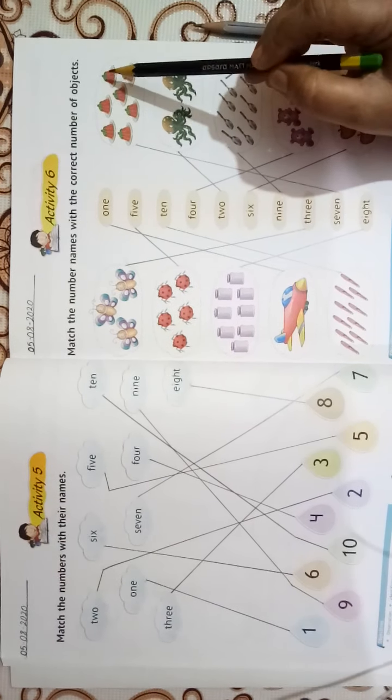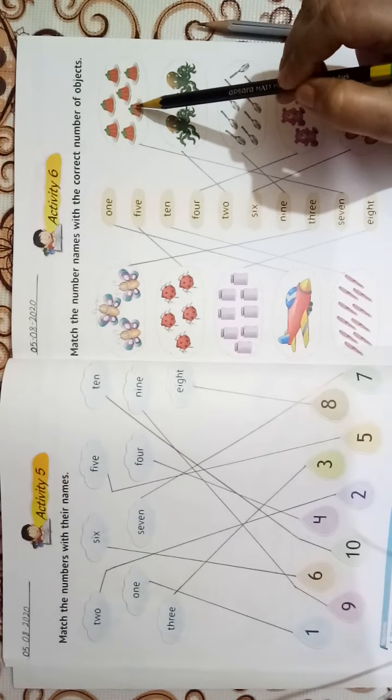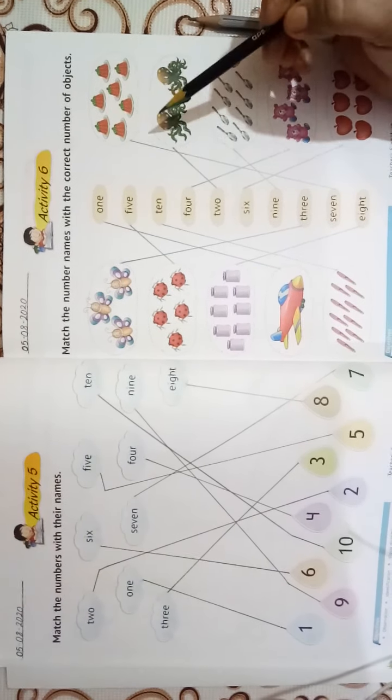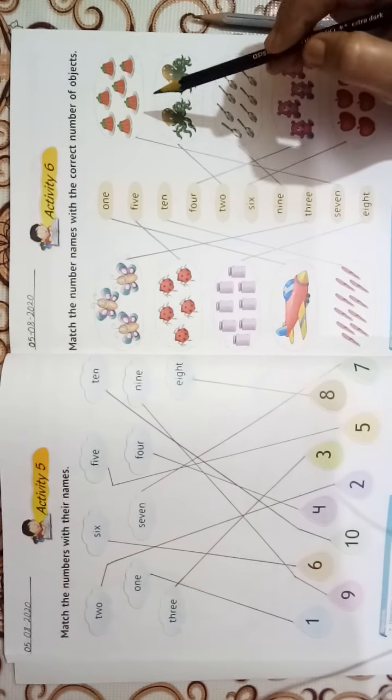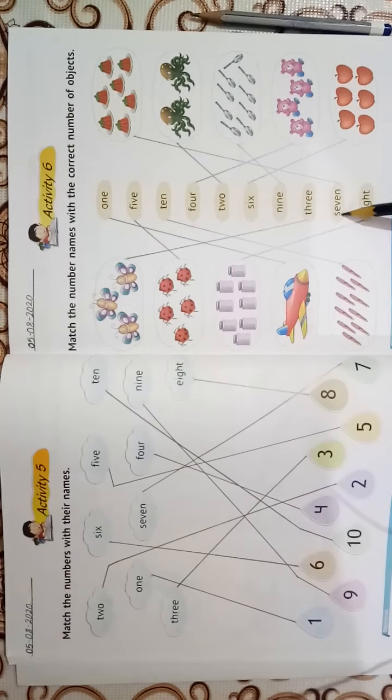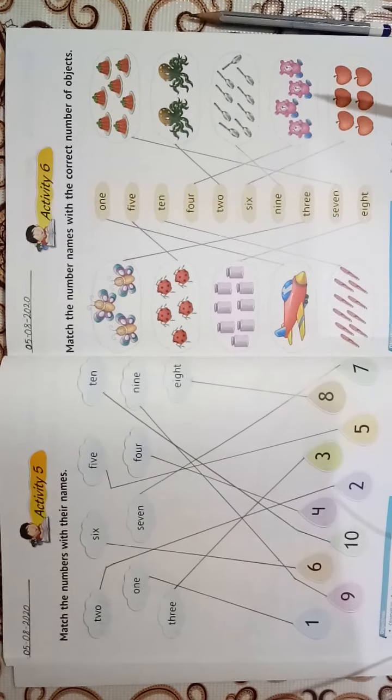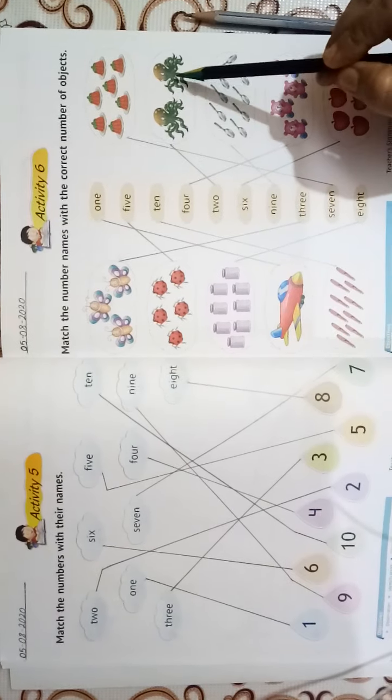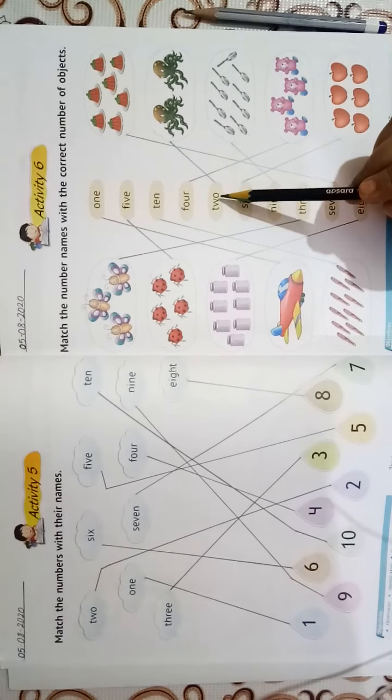1, 2, 3, 4, 5, 6, 7. We will match 7 pastries with S-E-V-E-N 7. We will match 2 octopus with T-W-O 2.